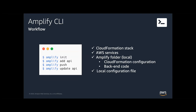What you end up with is a CloudFormation stack, which is infrastructure as code modified by the CLI. You get the AWS services created for you, a local file called aws-exports.js which is a local configuration file kept up to date by the CLI. As you make updates — add something, update something, remove something — you don't have to touch the configuration file; it updates for you. You also have an Amplify folder where you have any backend code you modify, such as Lambda function code and GraphQL schema.